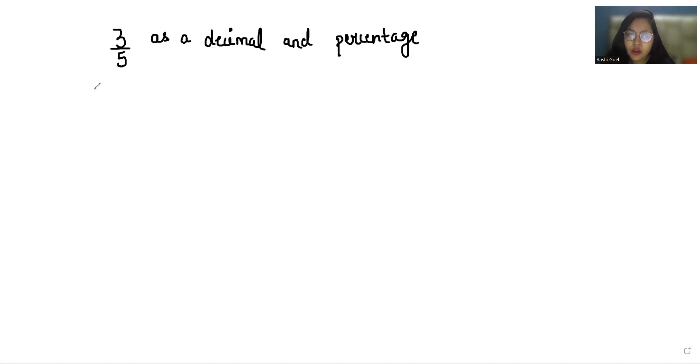So 3 by 5 right now is in fraction form and we have to first convert it to decimal form. In decimal, it is easier if our denominator is in terms of 10, 100, or 1000. We can simply convert this to a denominator of 10 by multiplying.